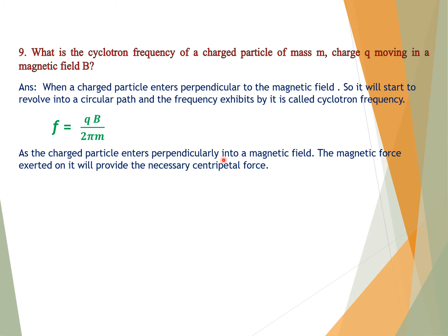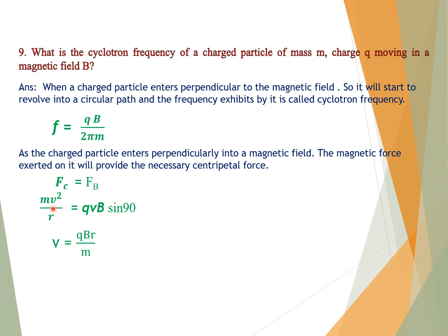Explanation: As a charged particle enters perpendicularly into a magnetic field, the magnetic force exerted on it provides the necessary centripetal force. The centripetal force equals the magnetic force: Mv²/R = QVB sin90°. Since sin90° = 1, cancelling V from both sides gives V = QBR/M.